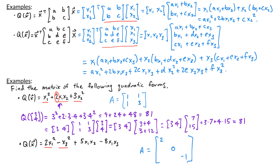Since A is symmetric, the (1,2) and (2,1) entries sum to the coefficient of x1x2, which is 5, so those entries are each 5/2. The (1,3) and (3,1) entries sum to the coefficient of x1x3, which is negative 8, so those entries are each negative 4. The (2,3) and (3,2) entries sum to the coefficient of x2x3. Since there is no x2x3 term, that coefficient is 0, so both those entries are 0.